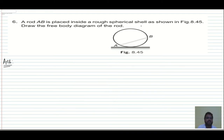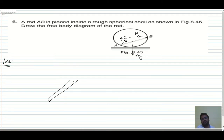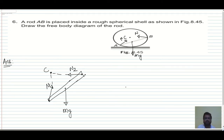Next question: rod AB is placed inside a rough spherical shell as shown in the figure. Draw the free body diagram of the rod. Wherever there is a touch, there must be a normal reaction. To draw the normal reaction for a circular surface, always draw the normal reaction towards the center of the circle. So N1 and N2 both point towards the center of the circle, and Mg acts vertically downward. This is the free body diagram for the rod.